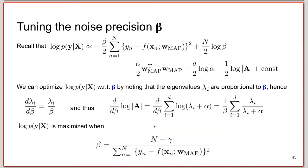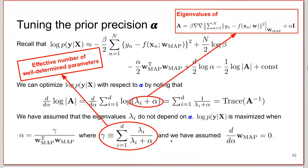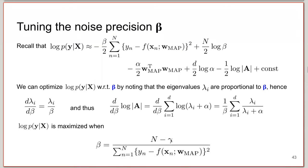You could do something similar for the noise precision beta. You just take your marginal likelihood, compute derivatives with respect to beta. Without going into the details, you obtain a similar expression, which is the sum of the squared errors of your model, now dividing not by the total number of data points but by the total minus the effective number of well-determined parameters.